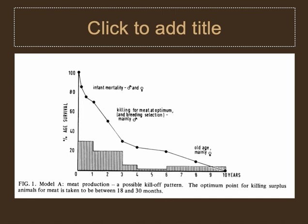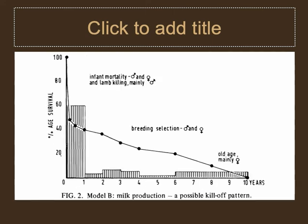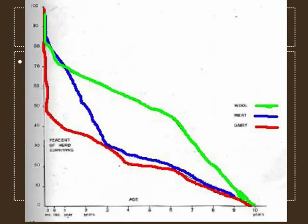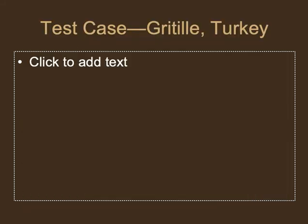If maximizing milk production, the females are most important and the young animals — especially young males — compete with you for milk. So you'd see a sharp drop even before one year of age, killing off very young animals, then a very slow gradual decline as you use the remaining animals for milk. For wool, there's no reason to kill them off at any particular time, so you'd just see a very gradual decline. This shows all three culling patterns together: red is milk, blue is meat, and green is wool.